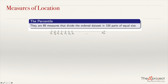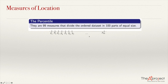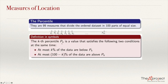P2, the second percentile, is positioned such that 2% of the data set is below it and 98% of the data is above it. Because P2 could be one of the data values, we say that at most 2% will be below it and at most 98% will be above it. So this will be the definition.